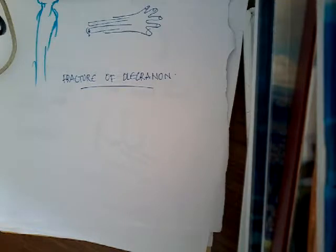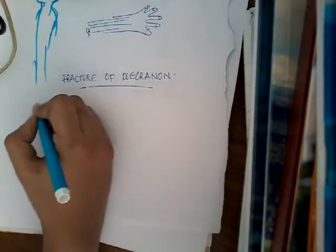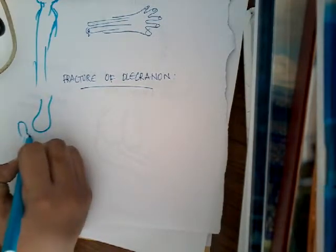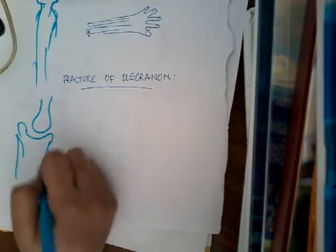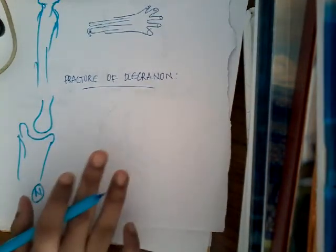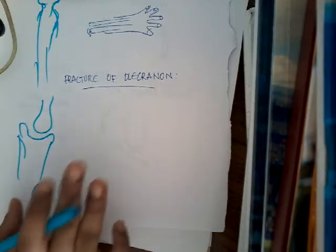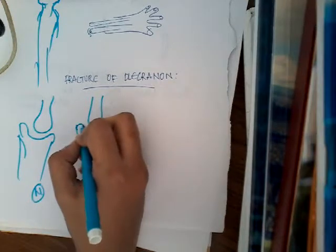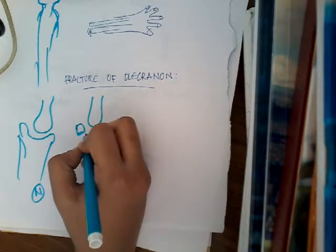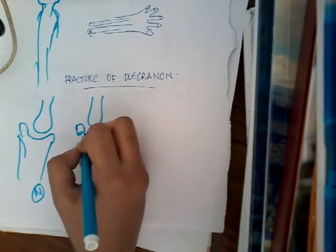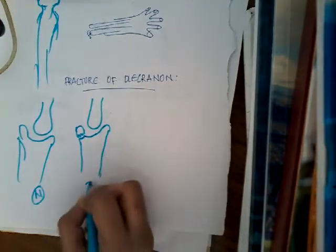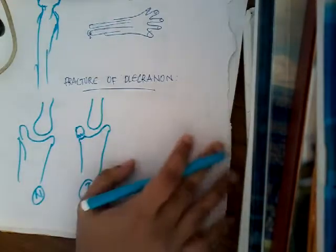The triceps muscle is attached to the olecranon process. Let me show you how this occurs — this is the humerus, and this is the olecranon process in its normal state. Now, there are three different types of fracture of the olecranon process. The first type is where there is just a crack but there is no displacement — only a fracture line with no displacement. That is Type 1.